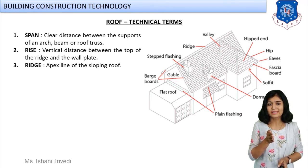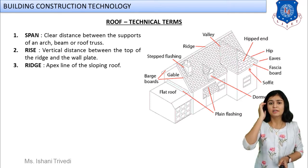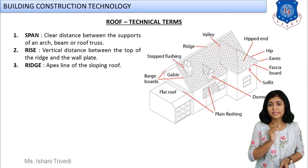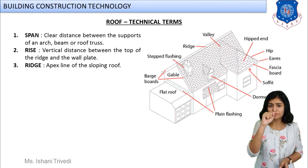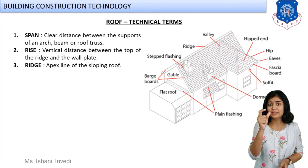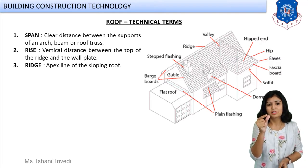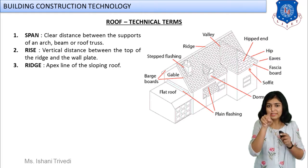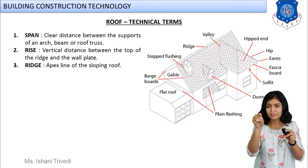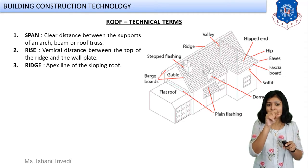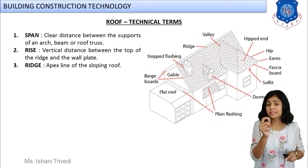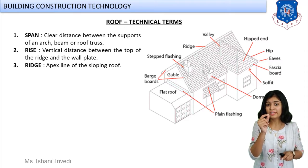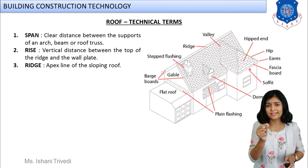The third technical term is ridge. Spot the ridge in the image — it is the top center part. Let us call it the apex: the apex line of the sloping roof. The full member provided at the topmost center of the pitch roof is the ridge line. You are considering the line, not the member. That apex line of the sloping roof is known as ridge. Ridge is also a term used for mountains — the topmost apex point is known as ridge.